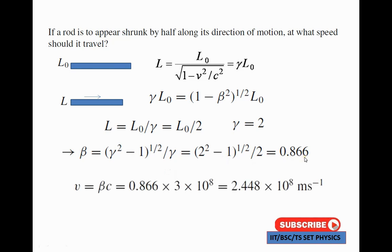Substituting beta into v equal to beta times c, where beta equal to 0.866 and c equal to 3 times 10 to the power 8 meters per second, we get v equal to 2.448 times 10 to the power 8 meters per second inverse. For competitive exams, the light velocity is approximately 3 times 10 to the power 8, giving the answer approximately 2.448 times 10 to the power 8 meter per second.